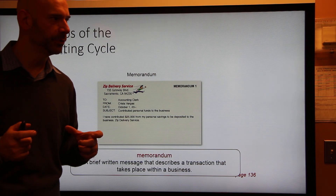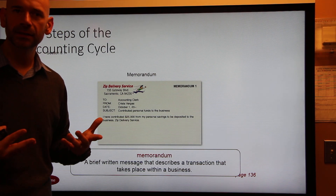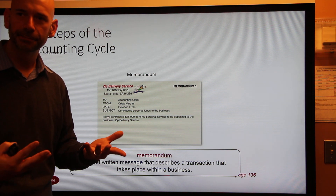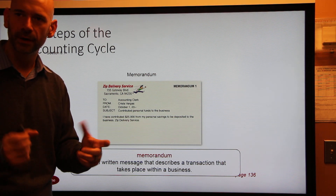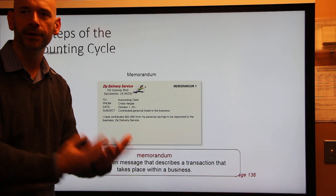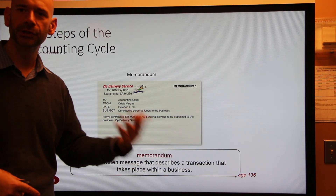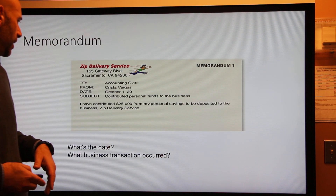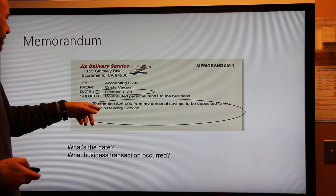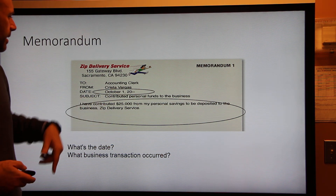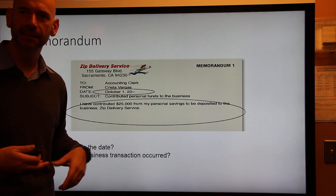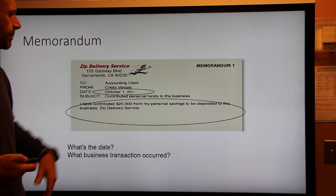A memorandum — or memo for short — is just a note. Sometimes the owner or manager has a transaction that takes place but there isn't another source document for it, so they write a note saying what just transpired. As the bookkeeper, you take that information and record it. For example, the memo might include the date and state that the owner contributed $25,000 from their personal savings into the business as an investment.